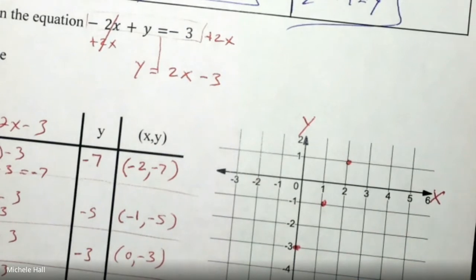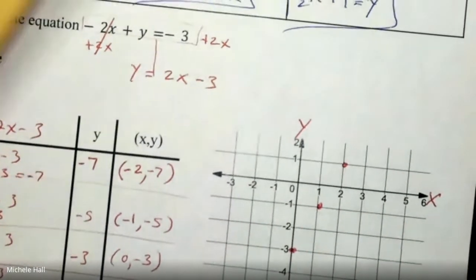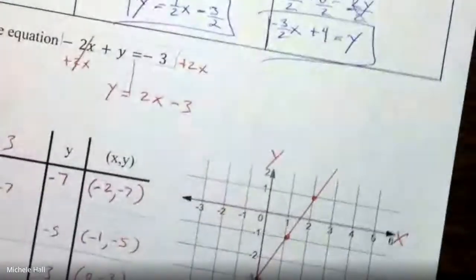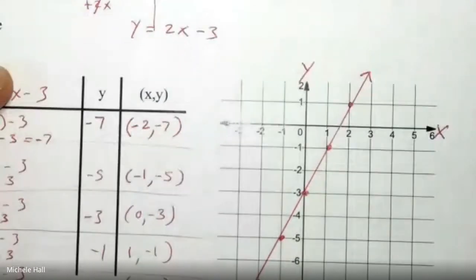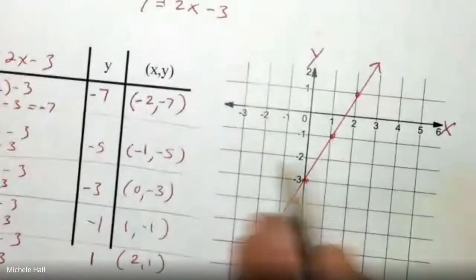That's like the visual check. They should all be lining up in a line. And then you just connect them. And you do put arrows on the end because it goes to infinity on both ends. The domain is all the real numbers. It's going to infinity.